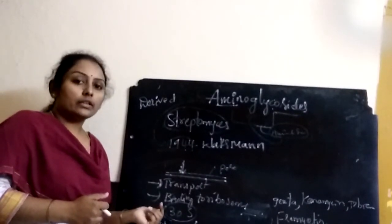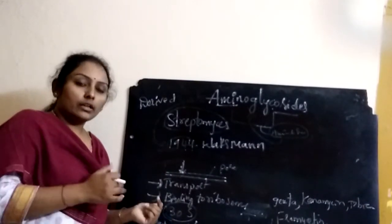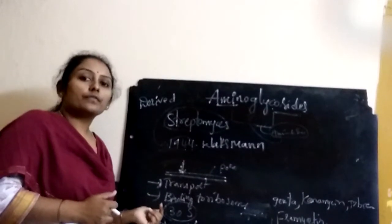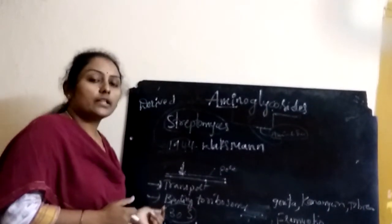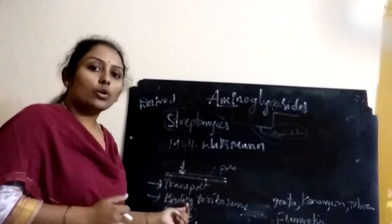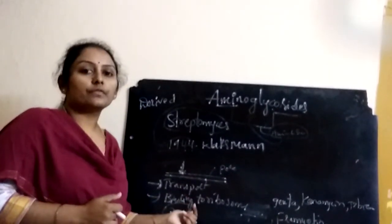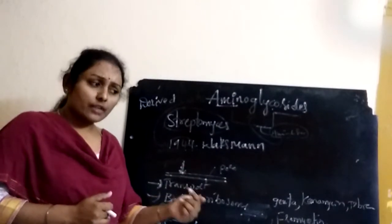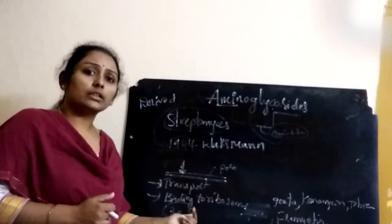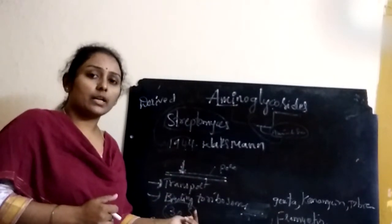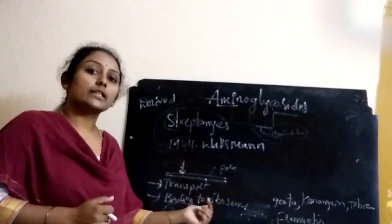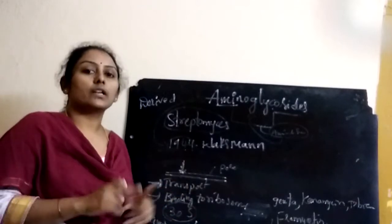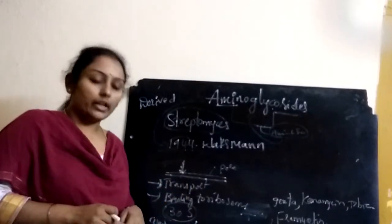This results in a decrease in the initiation and formation of proteins from the 30S ribosomes, leading to damage of the protein layer and cell wall layers.